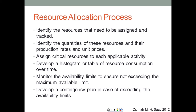The resource allocation process involves: identifying all resources to be assigned and tracked; identifying quantities, production rates, and unit prices; assigning critical resources to critical activities first; developing a histogram or table of resource consumption over time; monitoring availability limits to ensure the maximum is not exceeded; and developing a contingency plan to reassign peaks to areas with lower demand, achieving a smooth resource distribution.